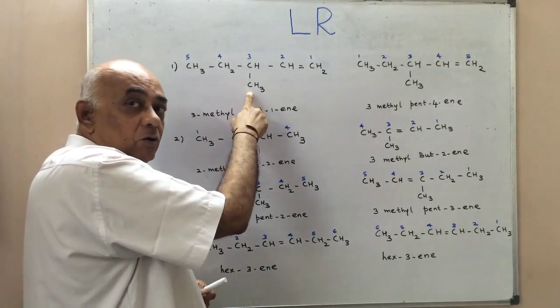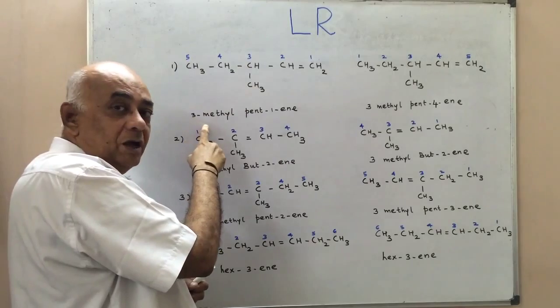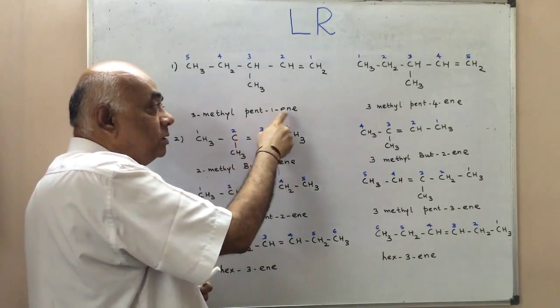There is, however, a methyl group attached on the third carbon atom, and therefore this is named 3-methyl-pent-1-ene.